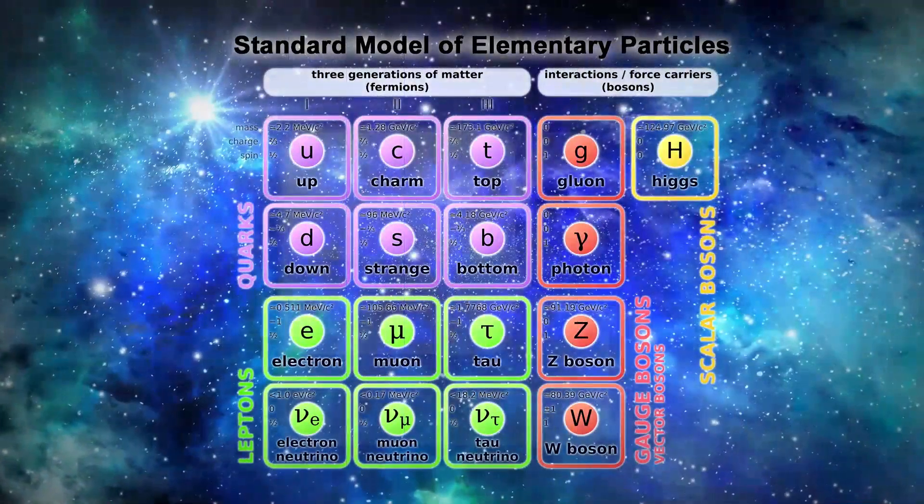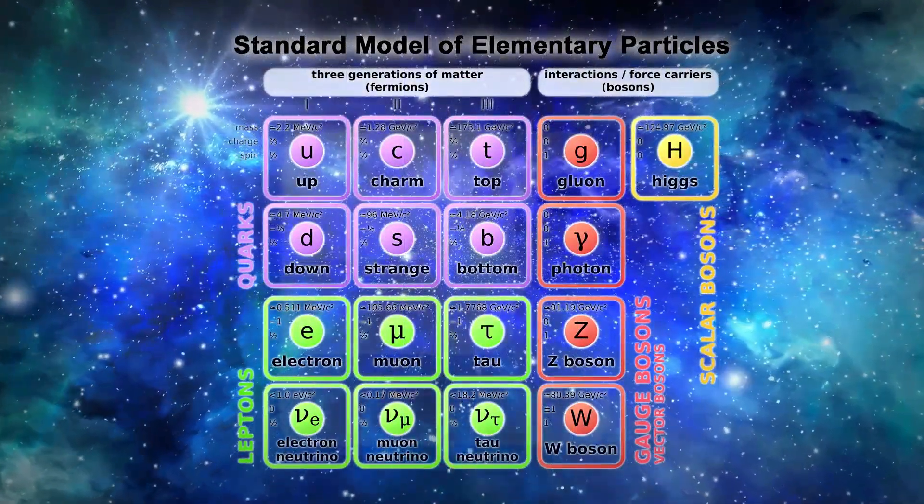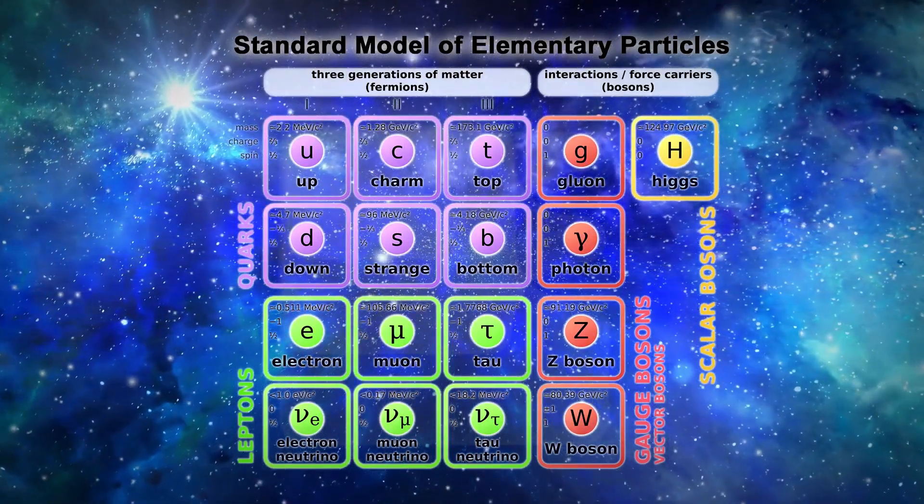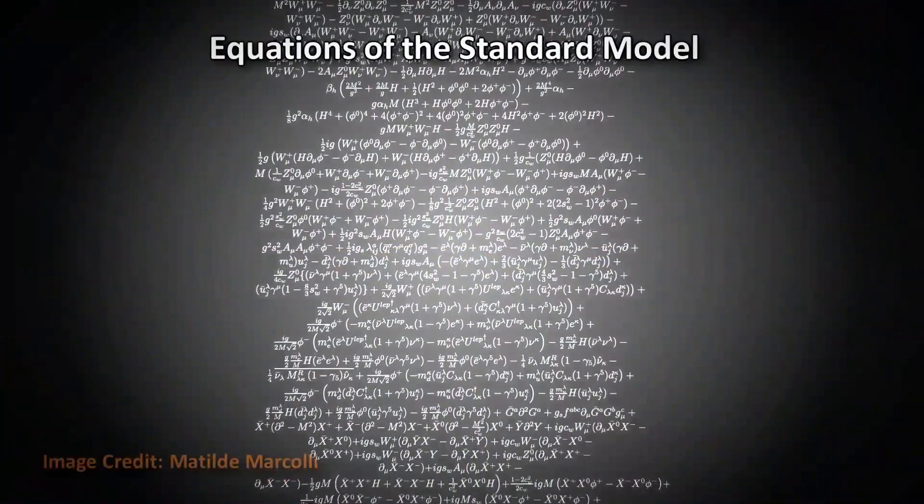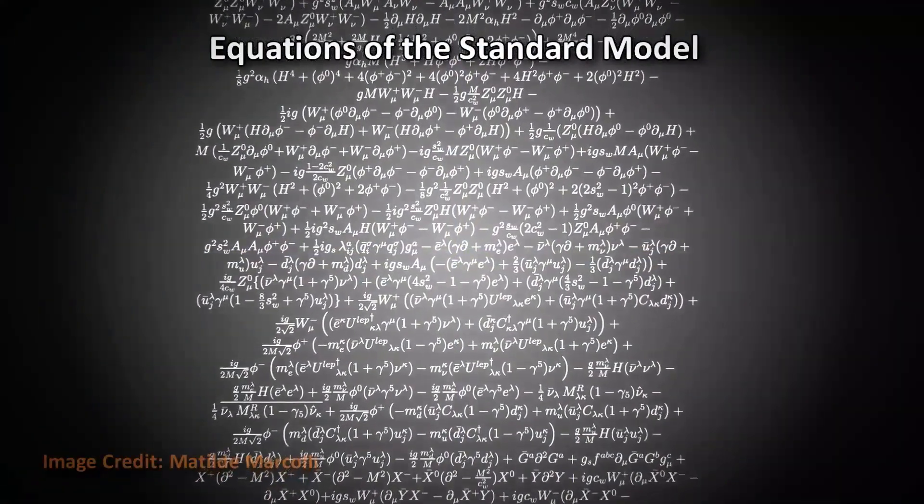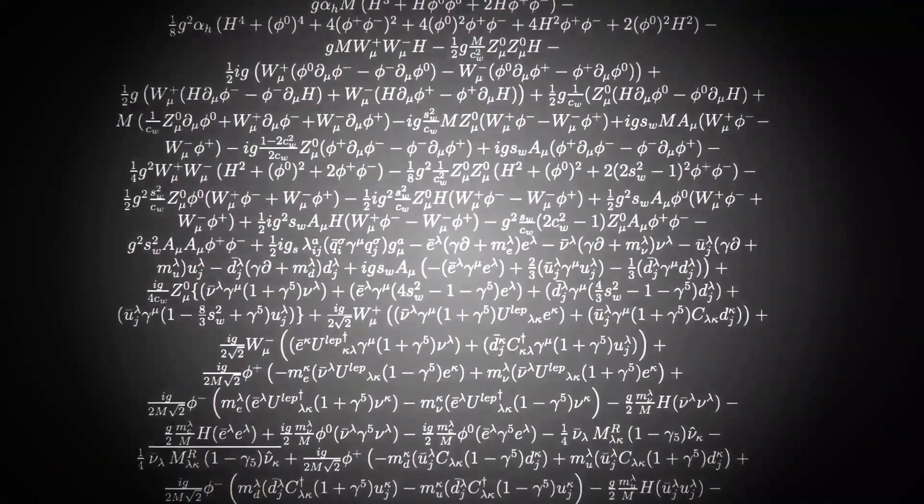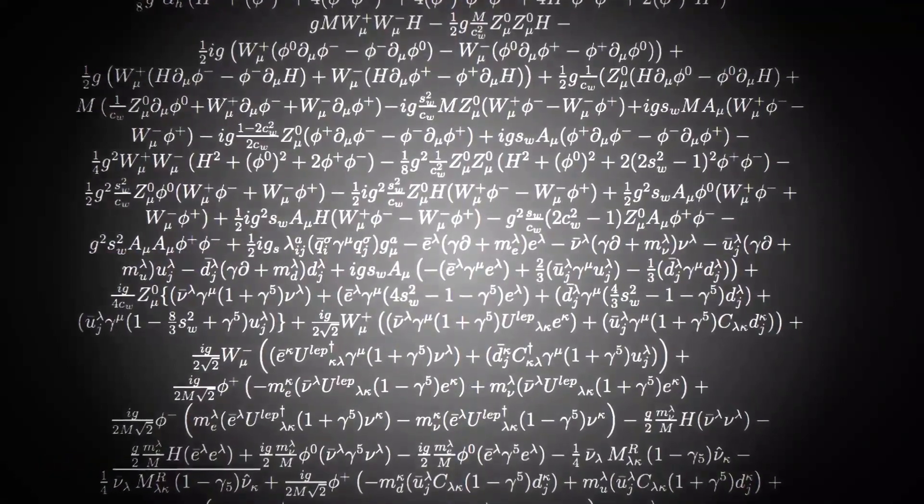This could be due to random chance or it could indicate undiscovered physics. Modern physics is in an unsettling state. The standard model is the name of the best theory ever devised to explain subatomic physics, and it is wildly successful, with many measurements agreeing extremely well with predictions.